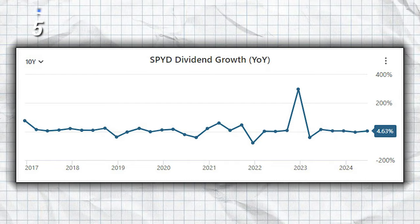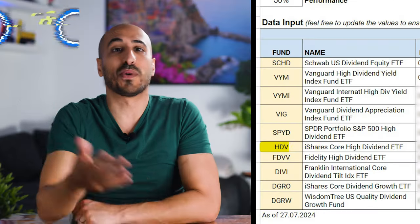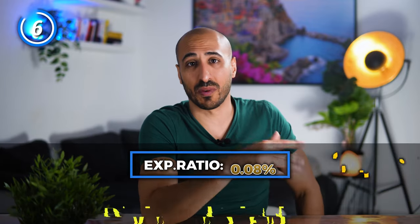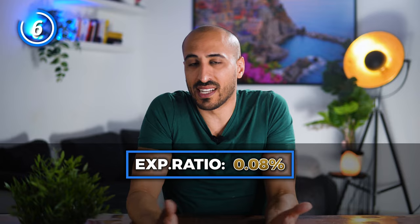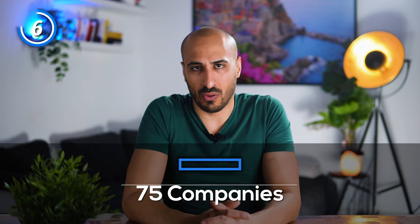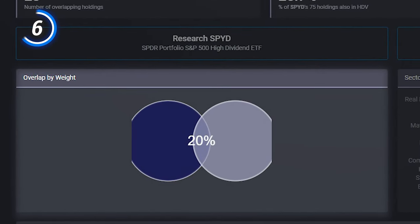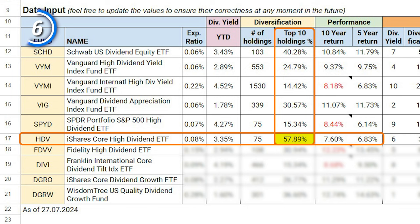Next is HDV, the iShares Core High Dividend ETF. HDV has a dividend yield of 3.35%, an expense ratio of 0.08%, and like SPYD, only 75 holdings — though if you own both, that's just a coincidence since they have a total overlap of just 20%. The top 10 holdings weigh 57.89% of the total portfolio, and the ETF delivered an average annual return of 7.6% in the last 10 years and 6.83% in the last 5.